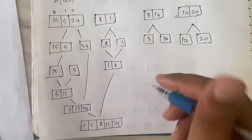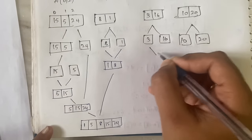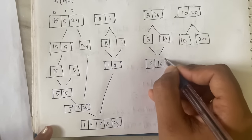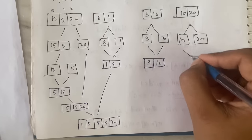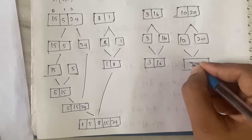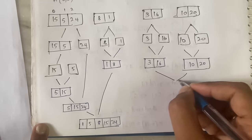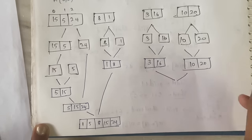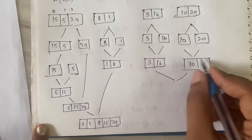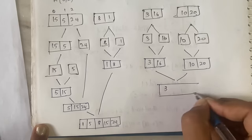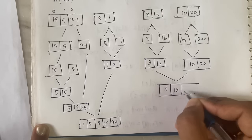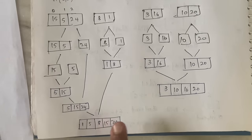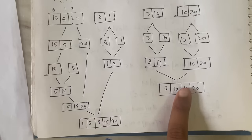Now merge the right side. {3, 16} merges to {3, 16} (already sorted), and {10, 20} remains {10, 20}. Merging those two gives {3, 10, 16, 20} — comparing all four elements: 3 is smallest, then 10, then 16, then 20.